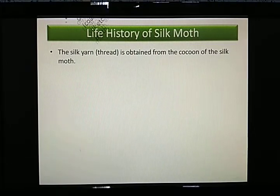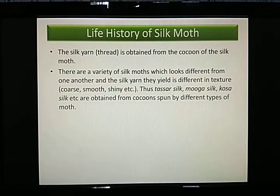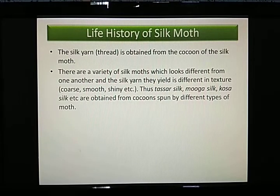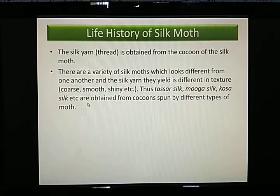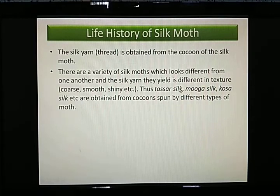There are a variety of silk moths which look different from one another, and the silk yarn differs in texture — it can be coarse, smooth, or shiny. Just as there are different breeds of sheep, there are different varieties of silk moth. Some examples are Sar silk, Mooga silk, and Kosa silk. The silk quality varies because it is obtained from different types of silk moths, often from cocoons spun by different types of moth.